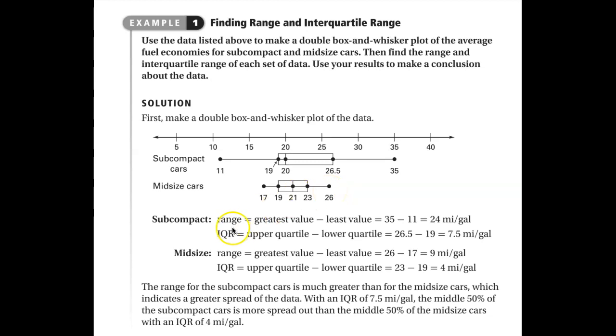And if we wanted to know the range for the subcompacts, it would be 35 minus 11, which would be 24. If I wanted to know the interquartile range, it would be 26.5 minus 19, which would be 7.5.